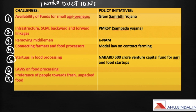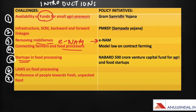The challenges are: Number one, availability of funds for small agripreneurs. Number two, infrastructure, supply chain management — backward and forward linkages are not at the optimum level. Number three, removing middlemen — eNAM is the solution the government has come out with. Number four, connecting farmers and food processors. Number five, startups in food processing. Number six, laws on food processing. Number seven, preference of people towards fresh, unpacked food.